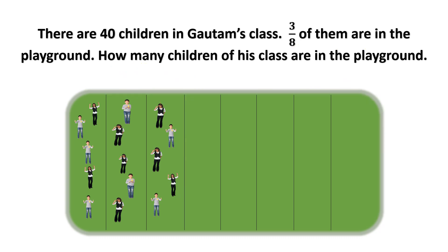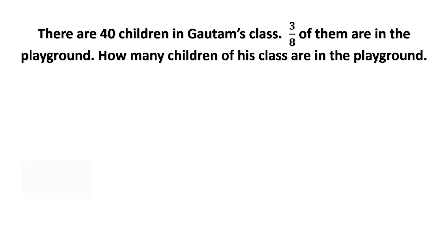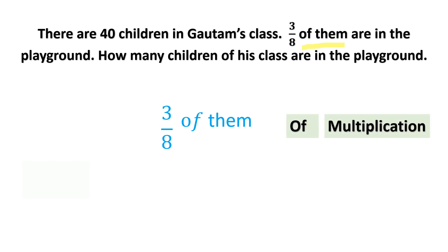But should we make a box, keep children in it, and then count? No. We should do the mathematics in a simpler way. There are 40 children in Gotham's class, 3 by 8 of them are in the playground. When you see 'of' in your question, do you know what that means? 'Of' means multiplication. And what is 'them'? 'Them' means 3 by 8 out of the 40 children.